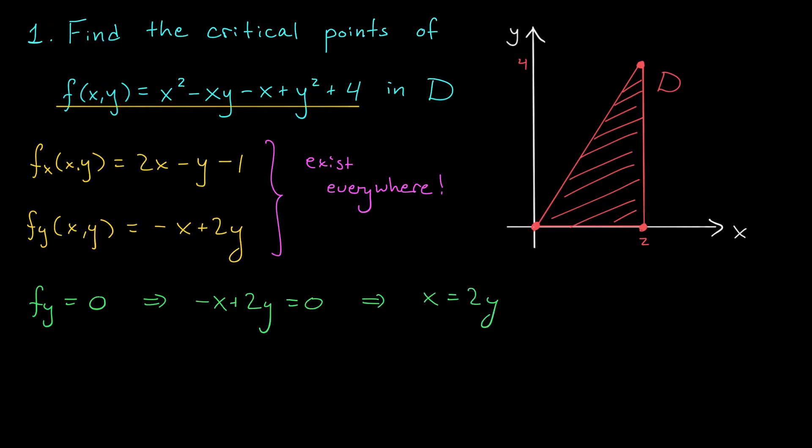Now we'll use this in our first equation, fx equals 0. That tells me that 2 times 2y minus y minus 1 is equal to 0. Or in other words, 3y minus 1 is 0. This tells me that y is 1/3.